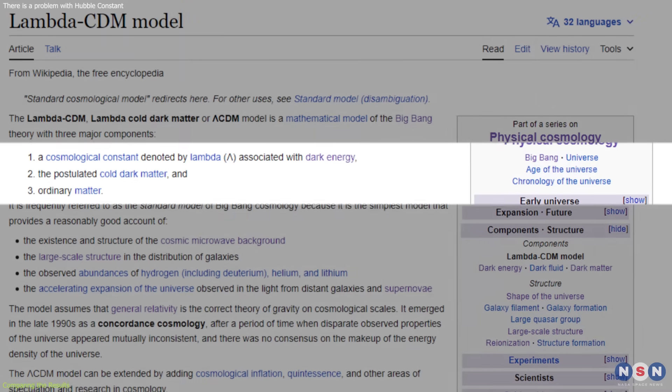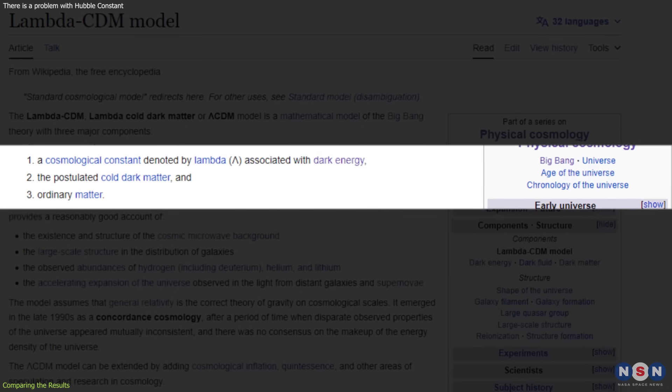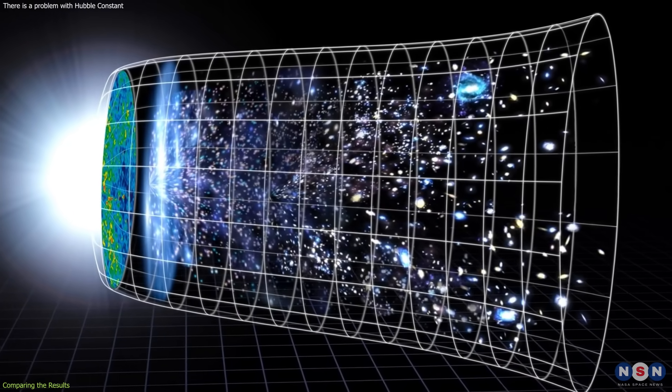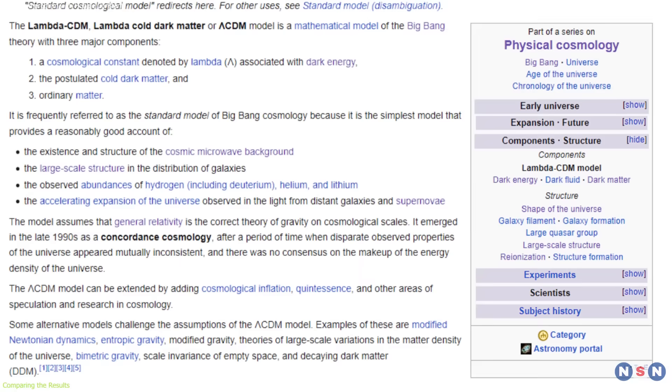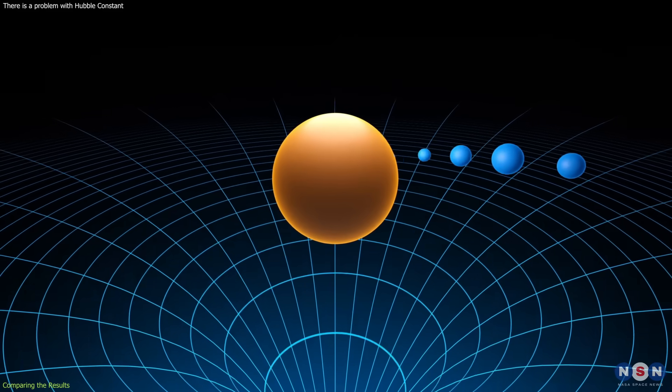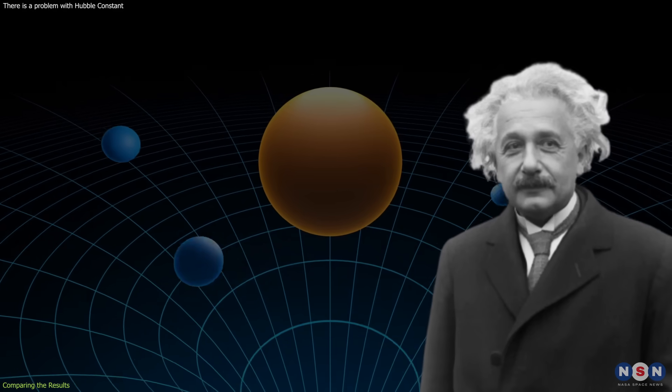The standard cosmological model assumes that the universe is made of ordinary matter, dark matter, and dark energy, and that it is flat, homogeneous, and isotropic. It also assumes that the universe is governed by general relativity, which is the theory of gravity proposed by Albert Einstein.